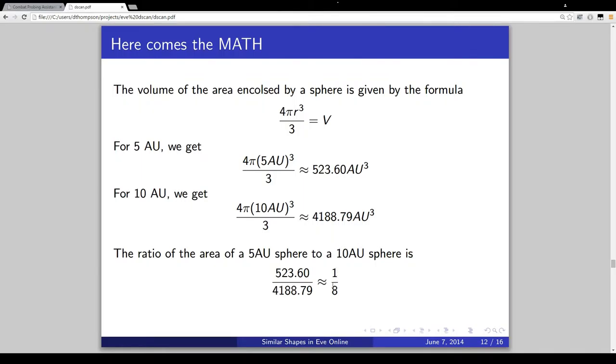But this actually isn't true at all, because whenever we actually plug in 10 AU to our formula, we see that we actually get over 4,000 AU cubed. So the ratio, the ratio of a sphere with 5 AU radius to a sphere with a 10 AU radius is actually 1 to 8. So we're not really, if we're using just a straight up binary search on the radius of the sphere, it's not even giving us close to the correct midpoint. We are way, way off.